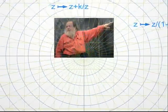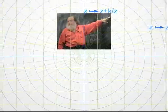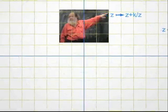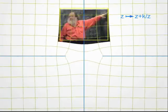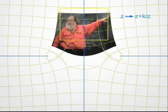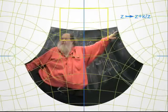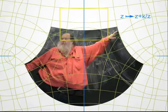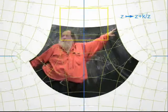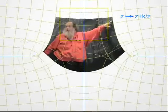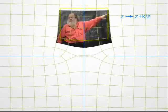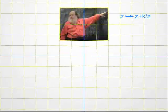One more transformation, more involved. Well, this one is not really a weight loss program for me. But note once more that, even though I got bigger, the shapes of small parts did not change. For instance, if you look at a button on my shirt, it keeps a circular shape. One says that these transformations are conformal, or holomorphic.